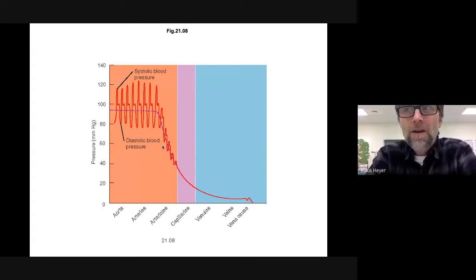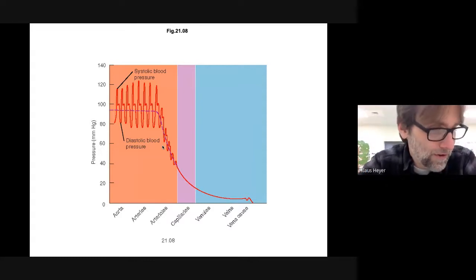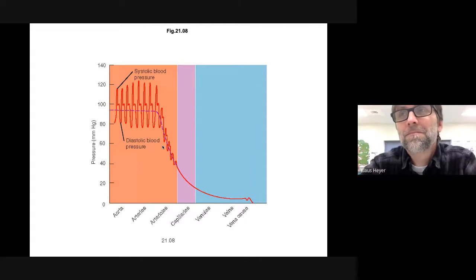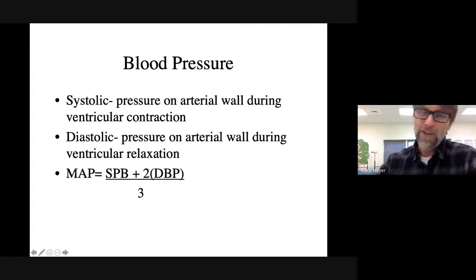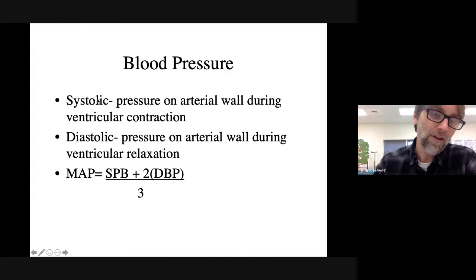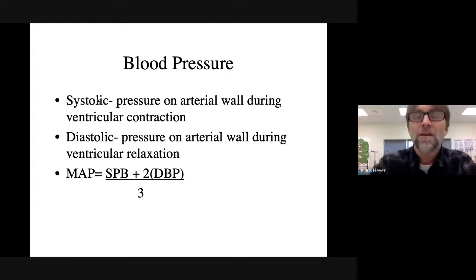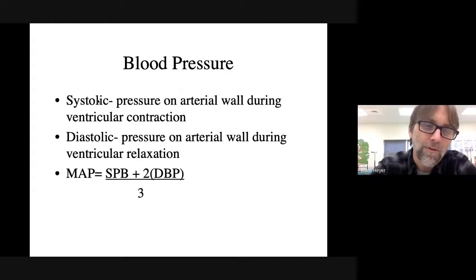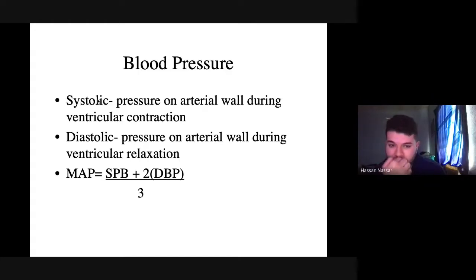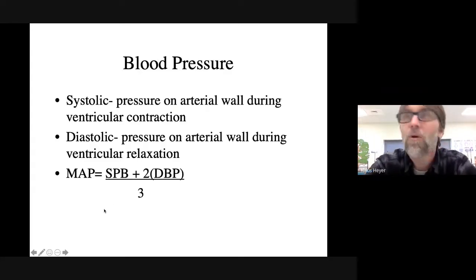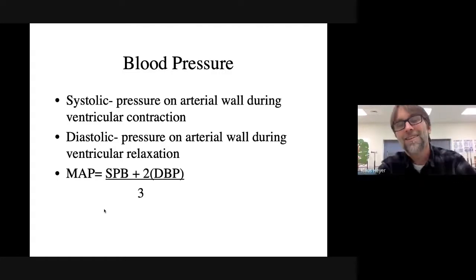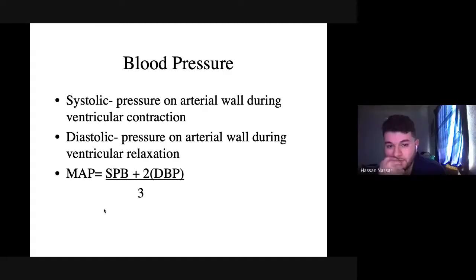Mean arterial pressure (MAP) is another way to read blood pressure besides systolic over diastolic. The formula is: take the systolic, add twice the diastolic, and divide the whole thing by three. It's used in hospitals — you can calculate it yourself or the machine does it automatically.